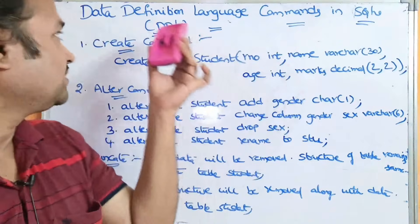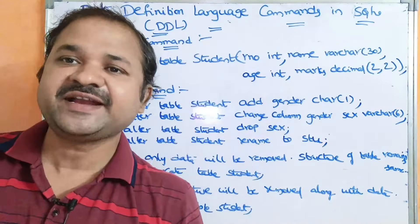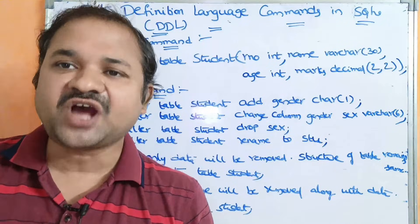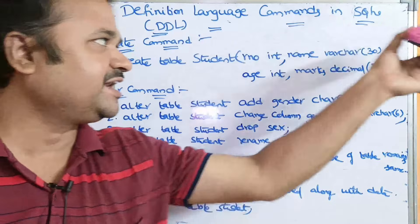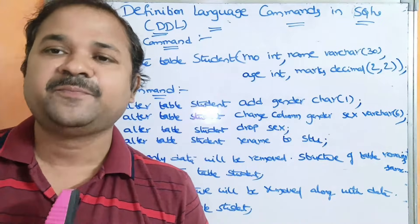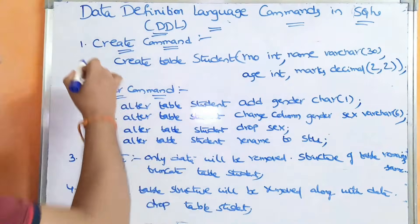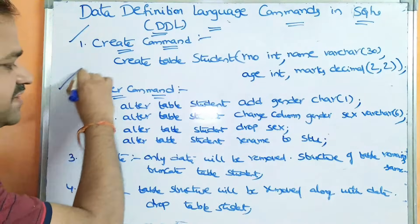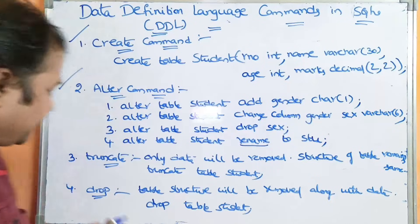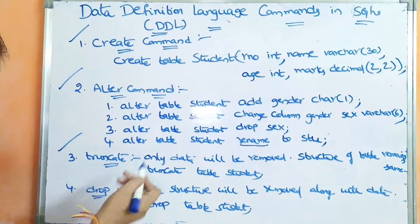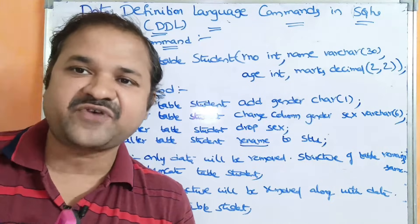Let us discuss data definition language commands in SQL, which we can call DDL. DDL commands in SQL mainly consist of five commands: the first one is the CREATE command, the second is ALTER, the third is RENAME, the fourth is TRUNCATE, and the last one is the DROP command.